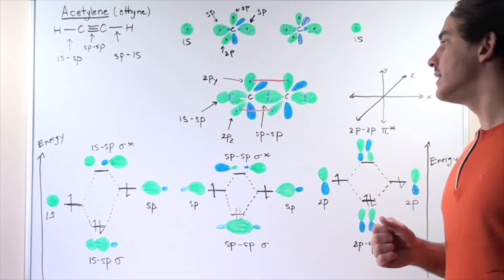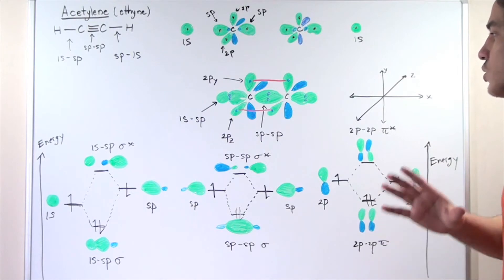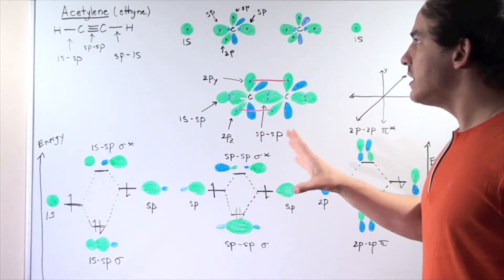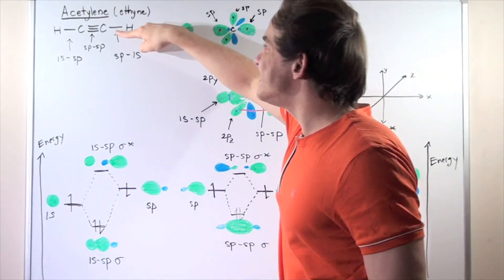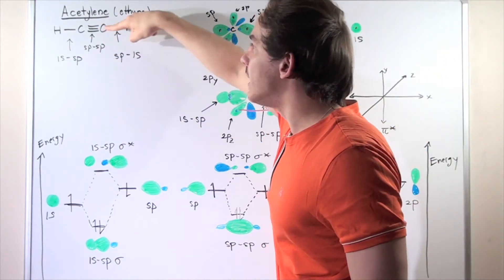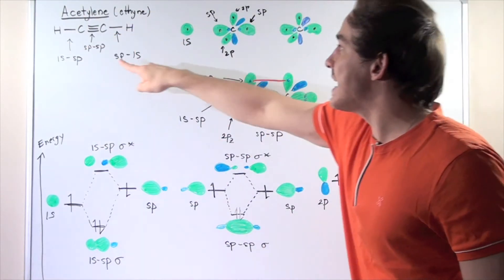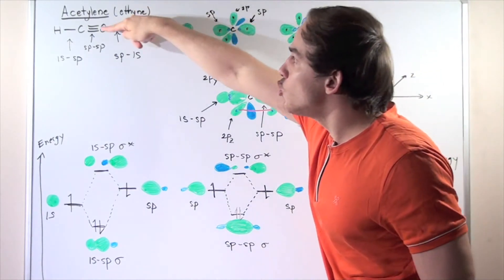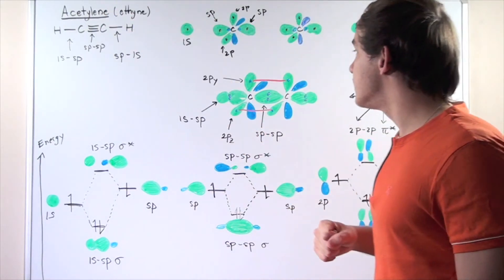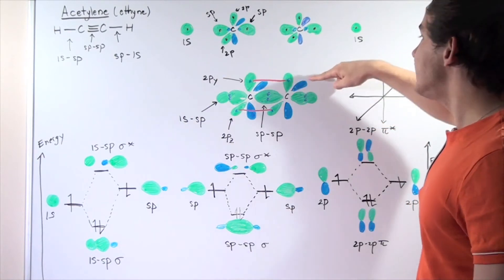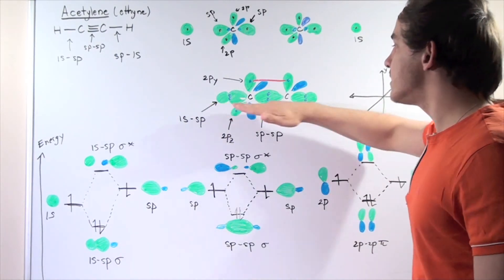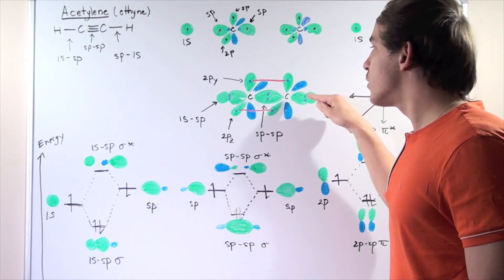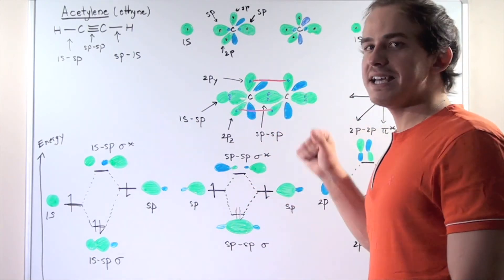As an overview of the triple bond: within the triple bond, we have a single sigma bond — the covalent bond — which is SP-SP hybridized. We also have two pi bonds, one along the y-direction and one along the z-direction. Both pi bonds are perpendicular to the covalent sigma bond.